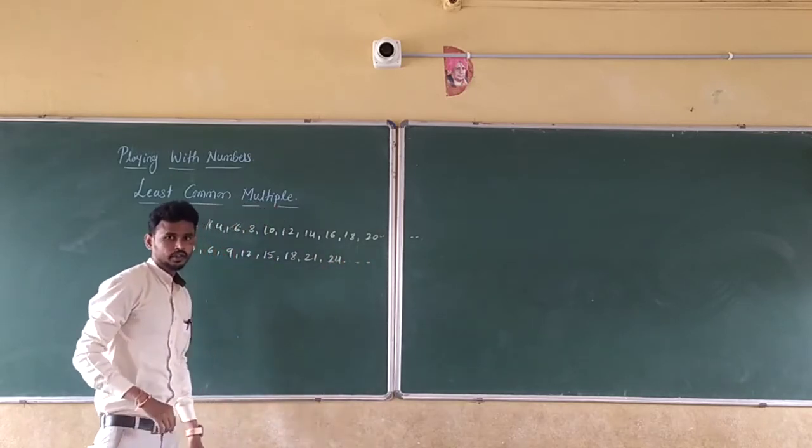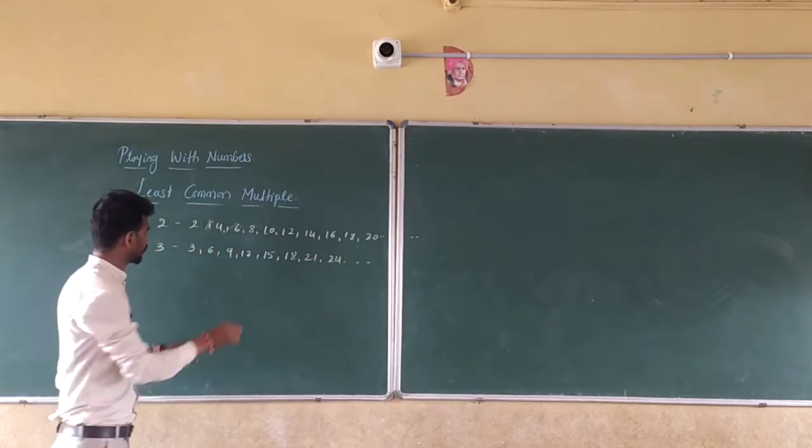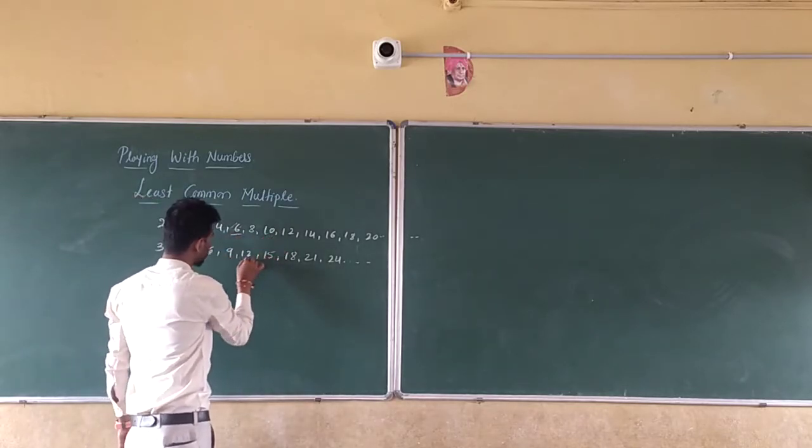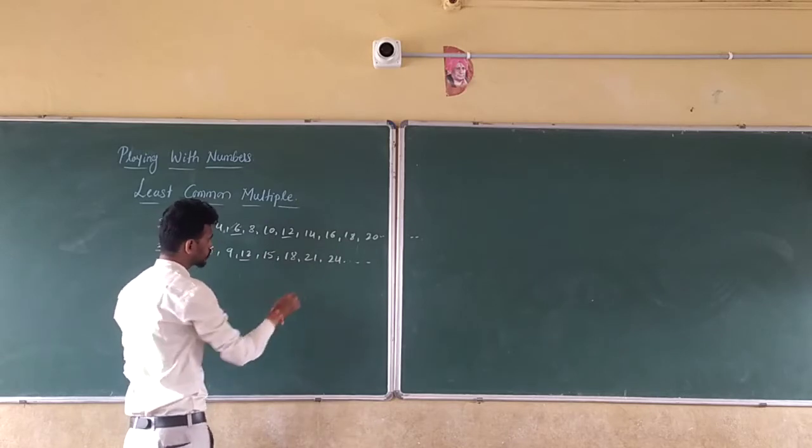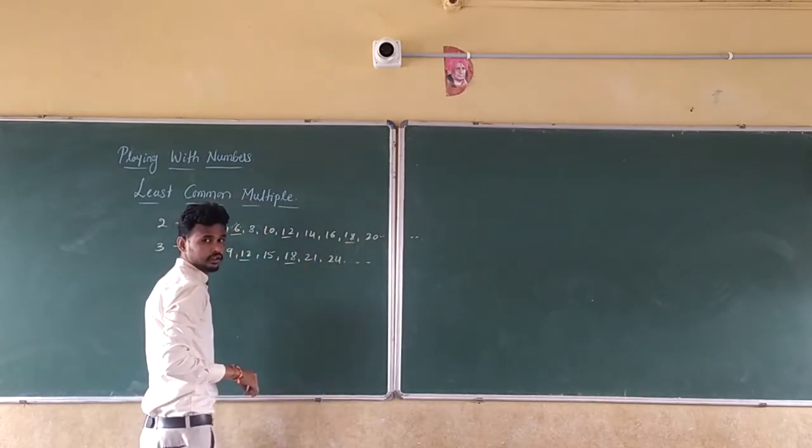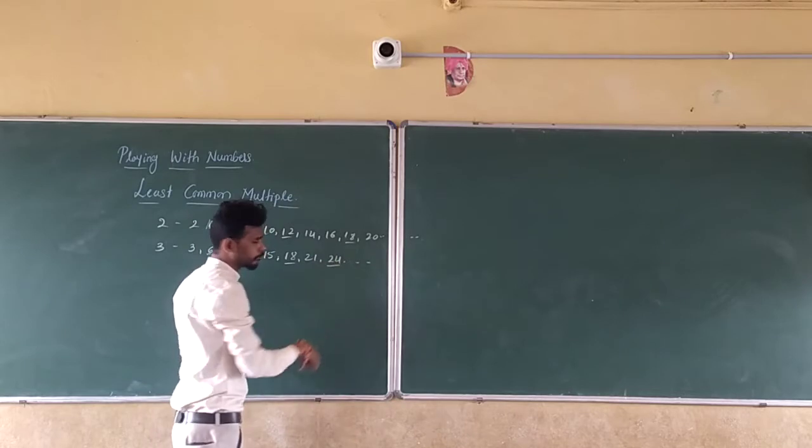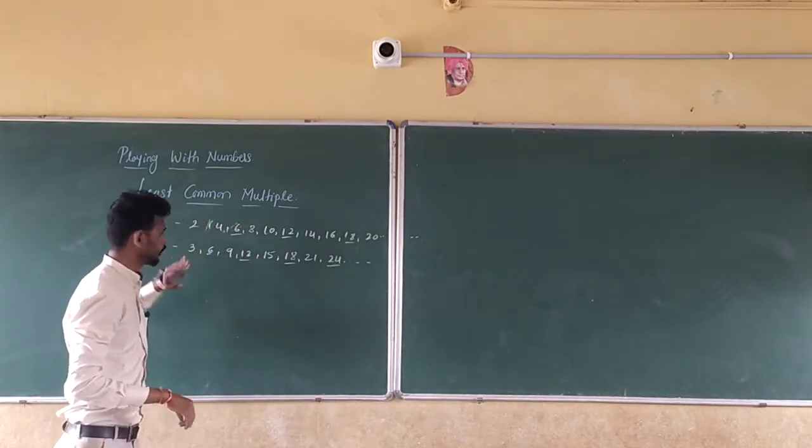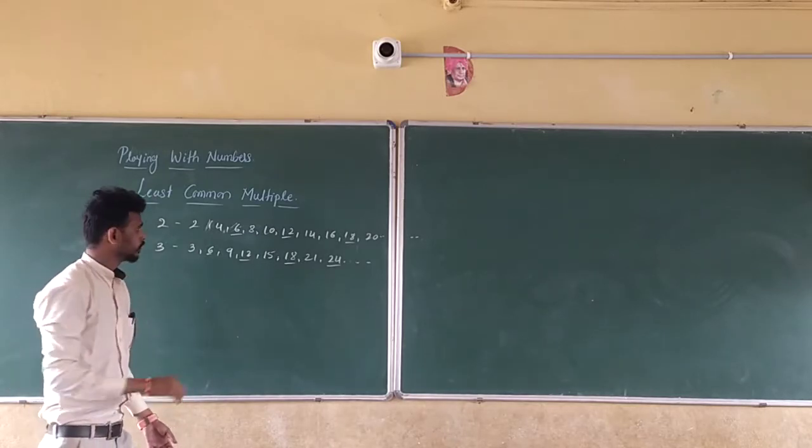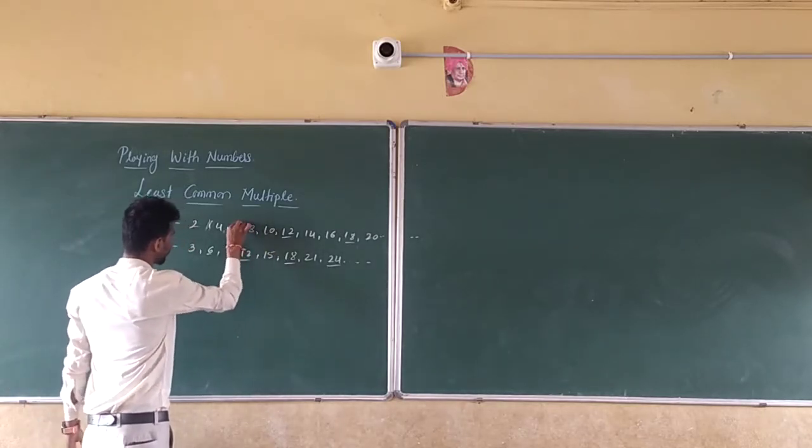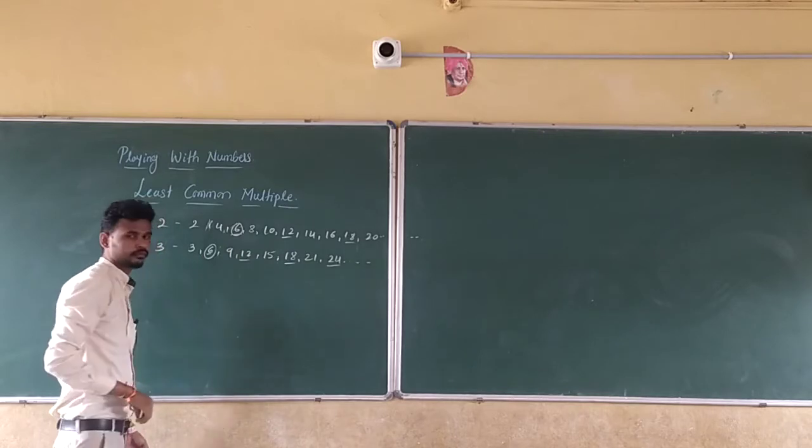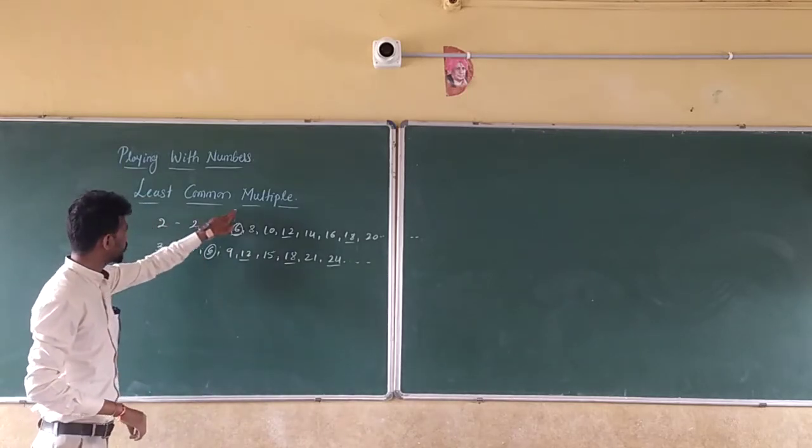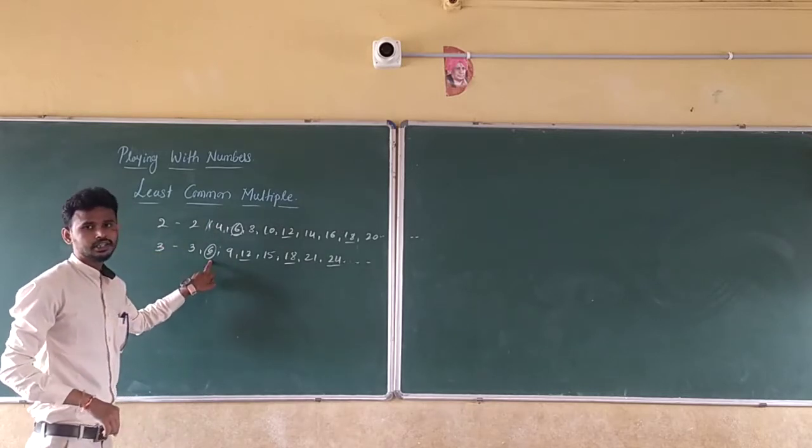So let us see what are the common multiples: 6, 6, next 12, 12, next 18, 18, then 24. So now these are all the common multiples of 2 and 3, but the lowest one is which one? The lowest one is 6. So the Least Common Multiple of 2 and 3 is 6.